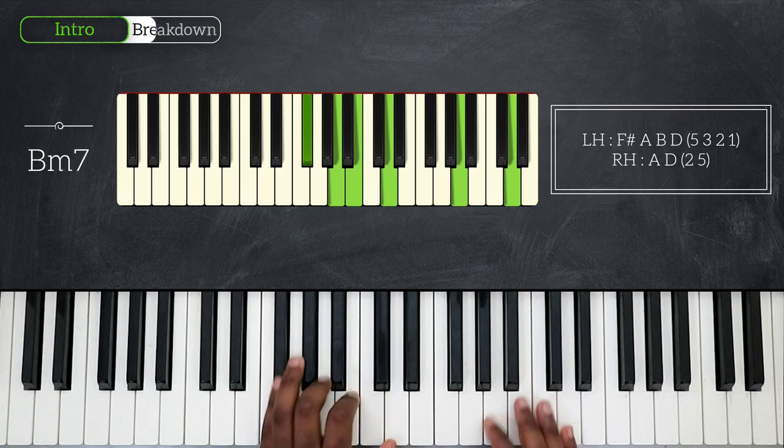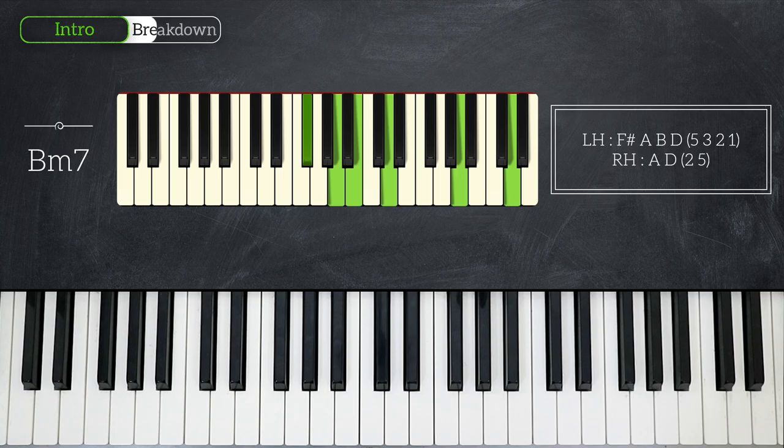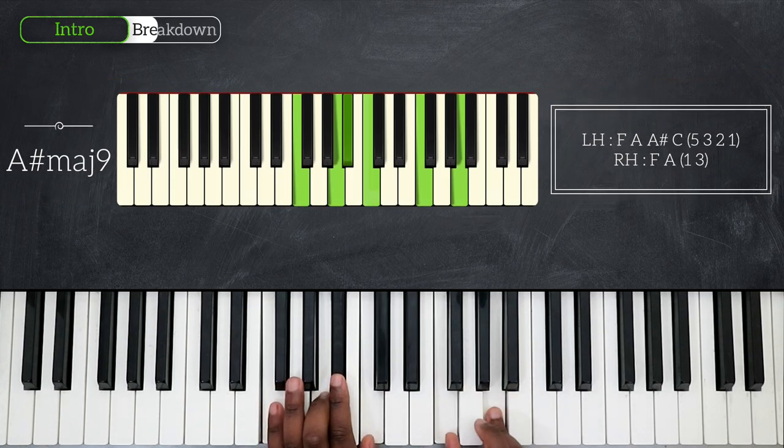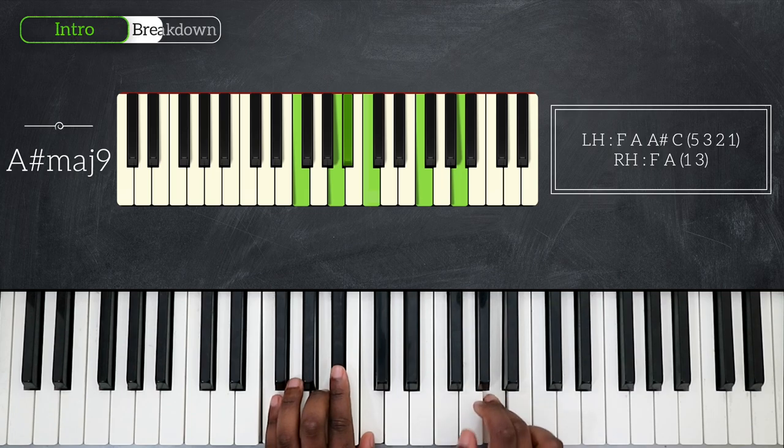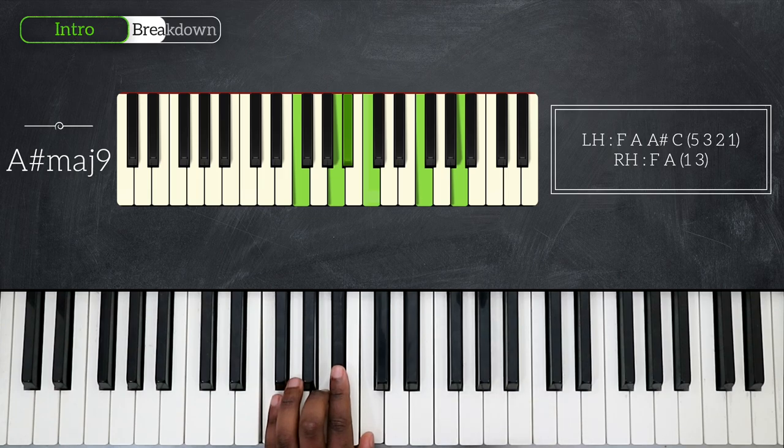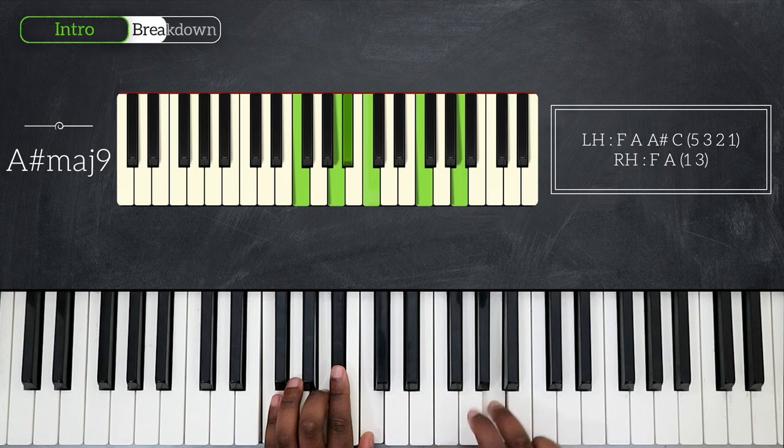Then I'm gonna go off key from here and play A sharp major 9 using this voicing. That's F, A, A sharp, and then C for my left hand. Still 2 notes on my right hand - that's F and A. And also here I'm gonna play my grace note from G to A using my second and third finger.